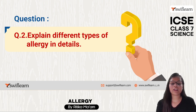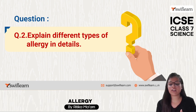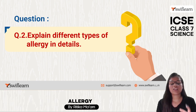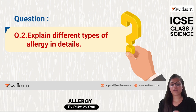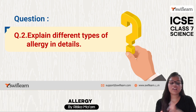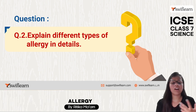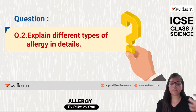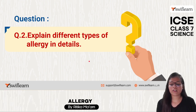Explain the different types of allergy in detail. We have two types: seasonal and perennial. Seasonal allergy occurs during a certain time of year — for example, if someone gets a cold in a particular month. Perennial allergy lasts throughout the year, such as asthma, occurring not just in one or two months but all year long.